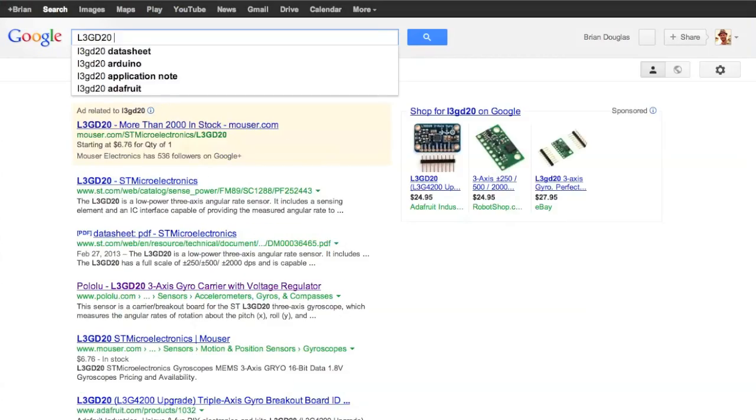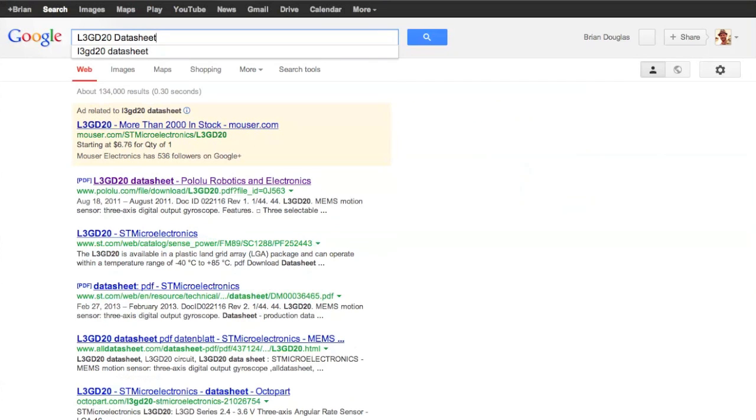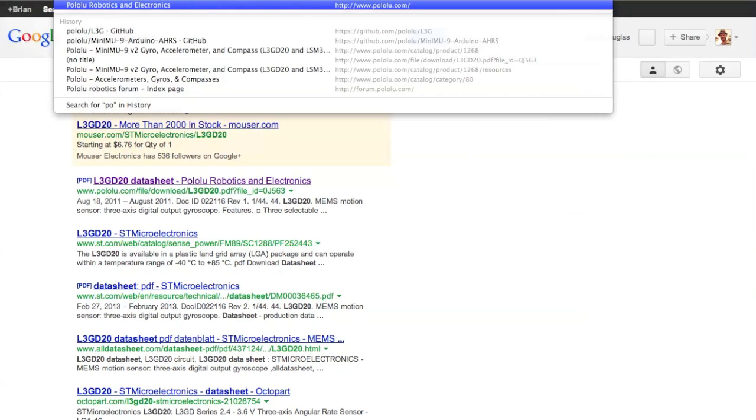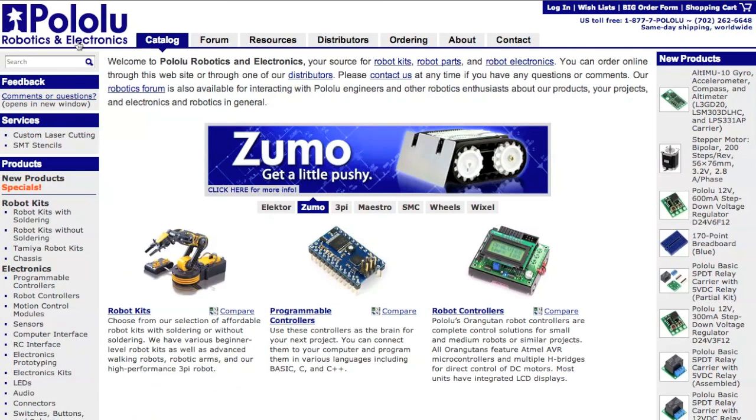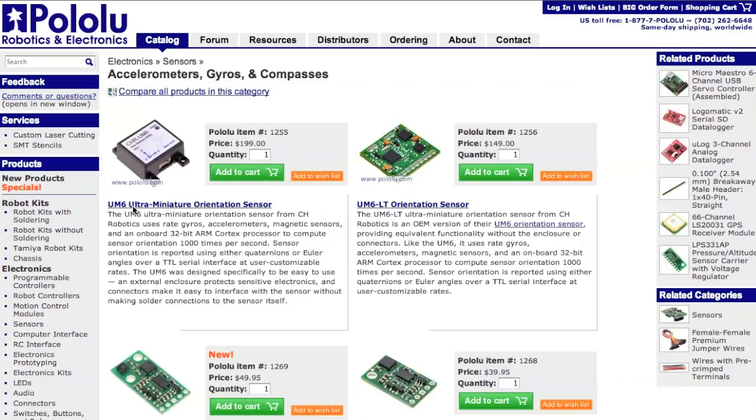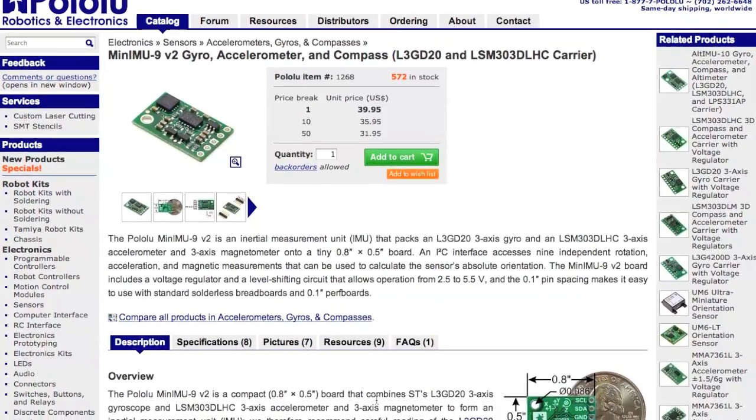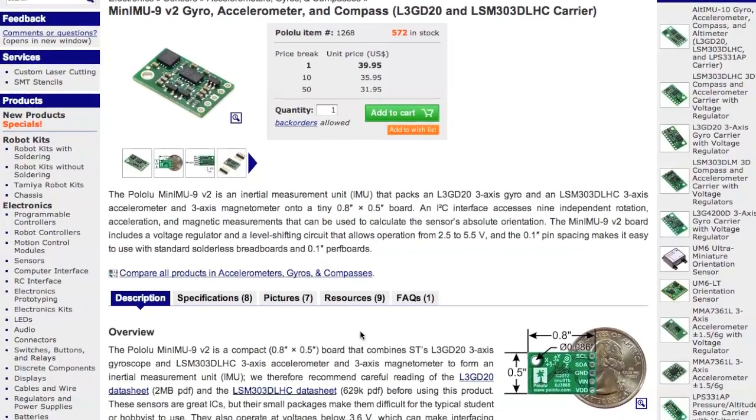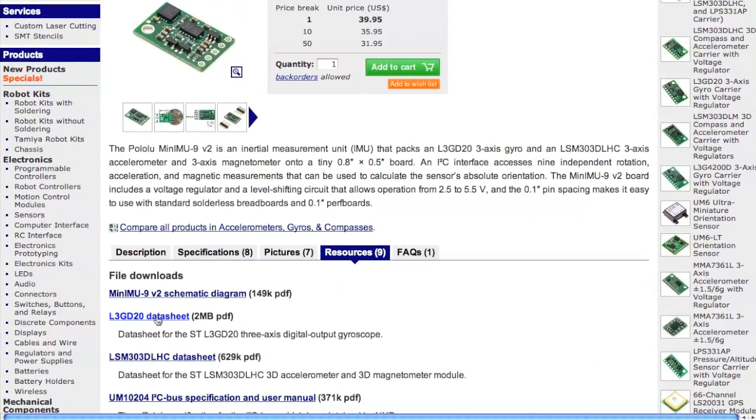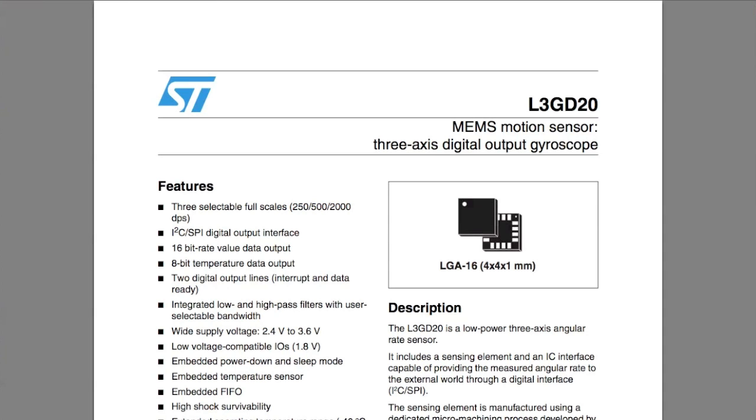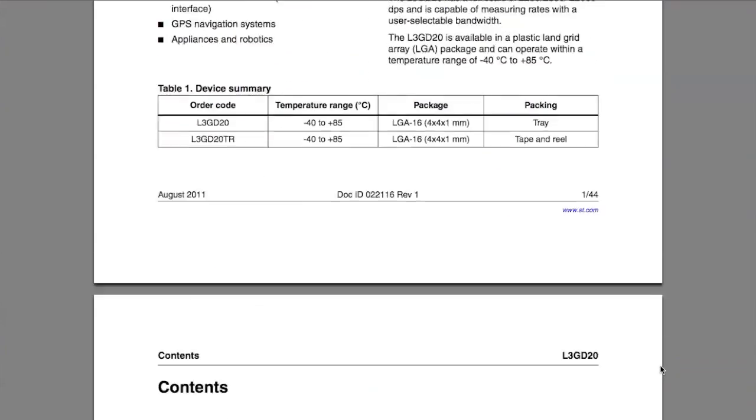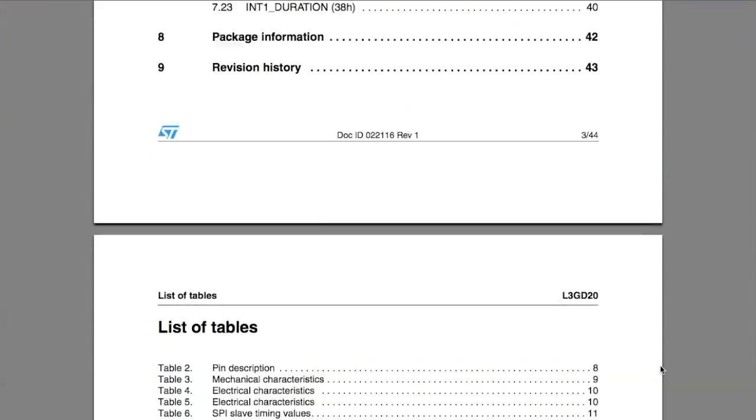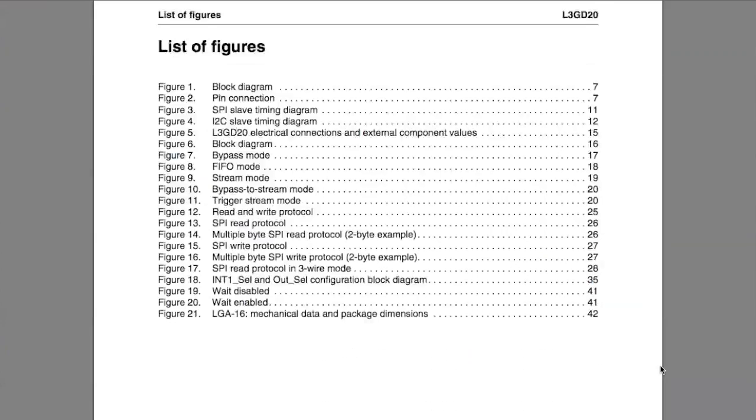Now no matter which sensor you have, you can usually just do a search for the product number and the word datasheet, and you're going to find lots of hits for it. Or in most cases, the place where you bought the sensor will have a link to the datasheet directly. The first page is usually an overview of the features, and it's going to give you a quick idea as to whether the sensor will work for you.